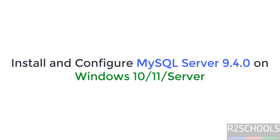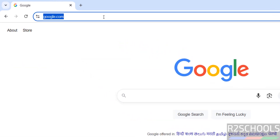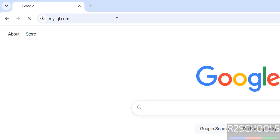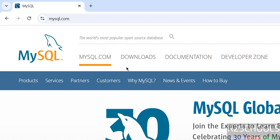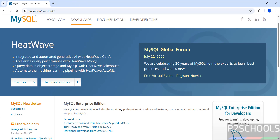Hello guys, in this video we will see how to download, install, and configure MySQL Server 9.4 on Windows 10 or 11 operating systems. The process is the same on all Windows servers as well. First, go to the MySQL official website at mysql.com, then click on Downloads, then scroll down.